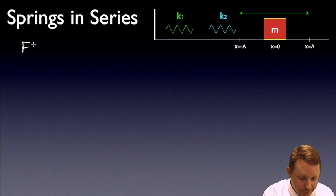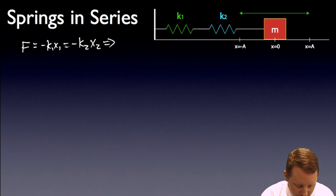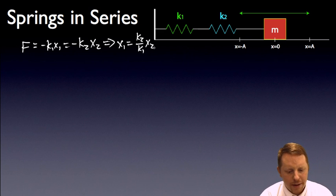Our force is going to be equal to minus k1 x1, that's the force on our spring, and of course that's going to be equal to the force from spring 2, Newton's third law. Therefore, it's pretty easy for us to solve to say that x1 must be equal to k2 over k1 times x2. We're going to come back to that in a minute.